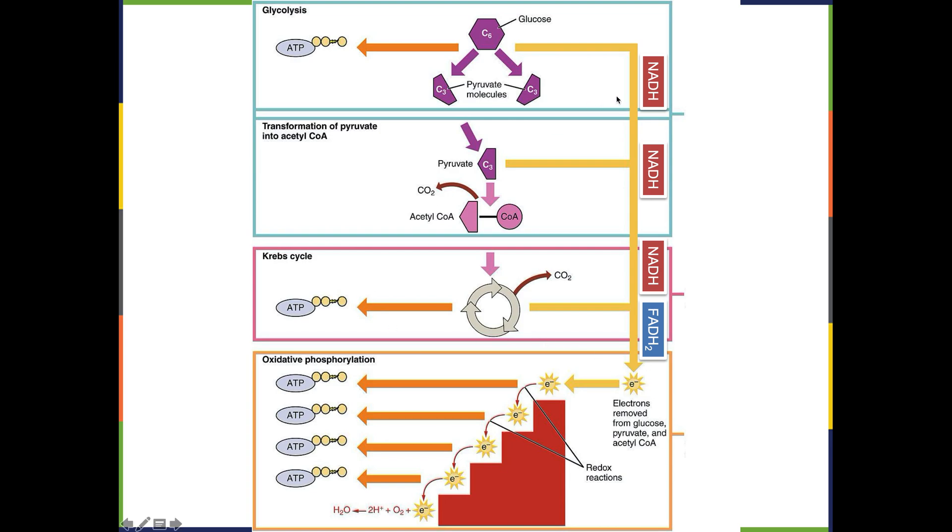Where do all these electron carriers fit in? NADH plays more roles in cellular respiration than FADH2. NADH picks up electrons in the glycolysis step, the pyruvate transformation step, and the citric acid or Krebs cycle. FADH2 only plays a role in the Krebs cycle. All of these molecules are carrying their electrons and will deliver them to the oxidative phosphorylation step.